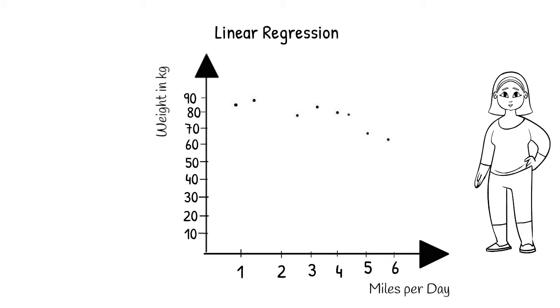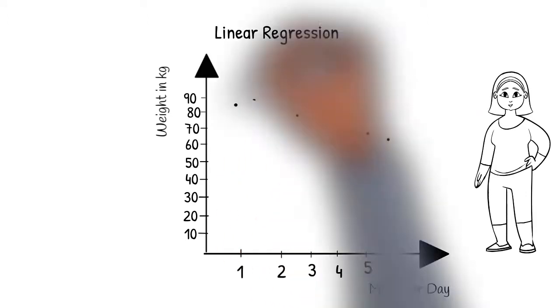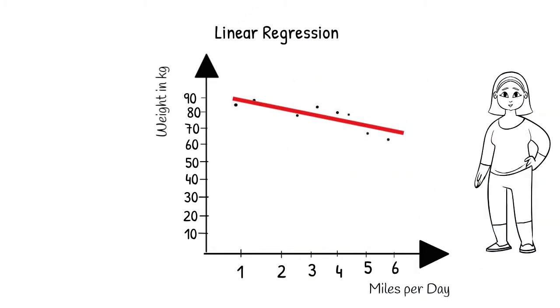Each point tells us how far each woman walks per day and her weight in kilograms. Since our data points are in the approximate shape of a line with no outliers, we can use a linear model to analyze the relationship between our variables.